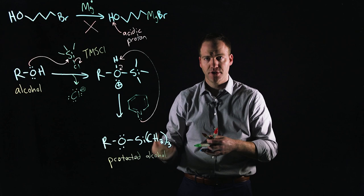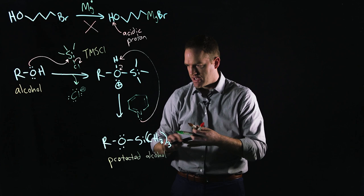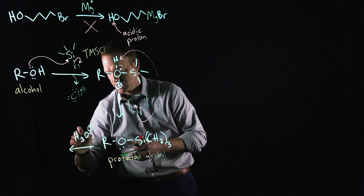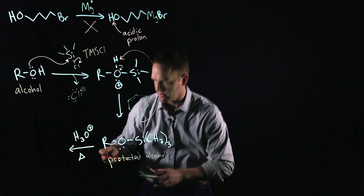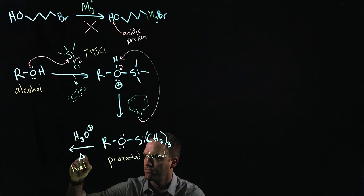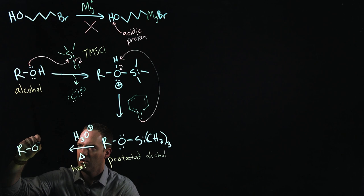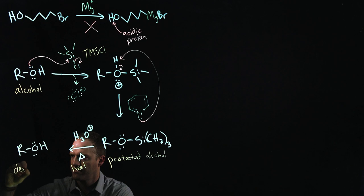The good news, the great part about this is, I can take my protected alcohol and very easily deprotect it in the presence of acid, water, and heat. So we call this acid, water, and heat hydronium plus heat. Remember that we use the triangle for heat. And that will liberate our protected alcohol back to what we would now call a deprotected alcohol.